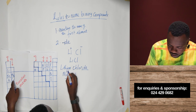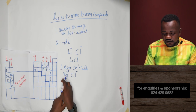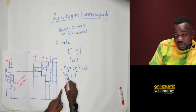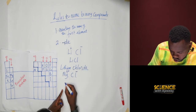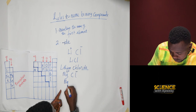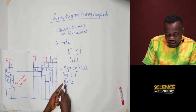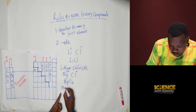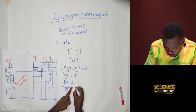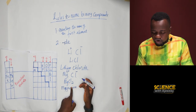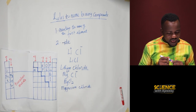Let's take magnesium and chlorine. Magnesium is in group two, so it has a 2+ charge; chlorine is minus one. We interchange the charges, so you get MgCl₂. This is magnesium — and chlorine becomes chloride — so the compound is magnesium chloride.